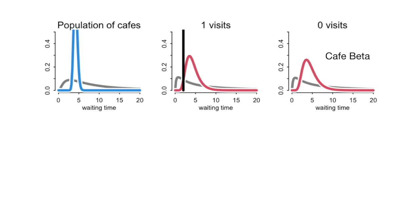Now let's consider a second cafe — cafe beta. Before the golem has been to cafe beta, it has an expectation that is not the original distribution of cafes. Its expectation about cafe beta is now informed by its visit to cafe alpha, because it remembers that visit and has used that memory to update its prior for cafe beta. This is what happens when there's memory in the model — when you have an explicit population model as well as just a model for the observations themselves.